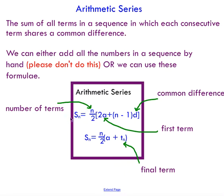I'm not going to derive where this comes from in this video, but you could just do a little bit of research if you're interested. And then I have this other formula that works as well. Same thing for sum of the first n terms is equal to n over 2 times a plus tn, where tn is the final term.